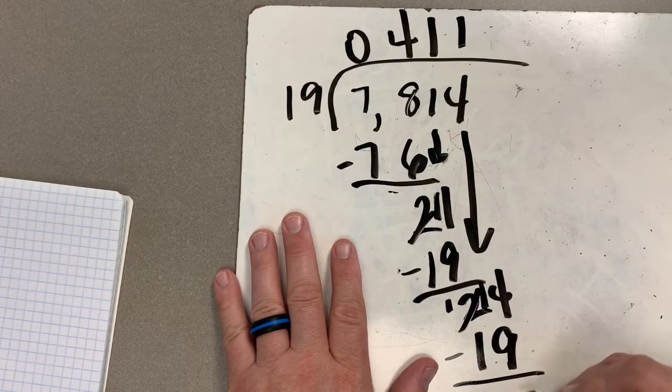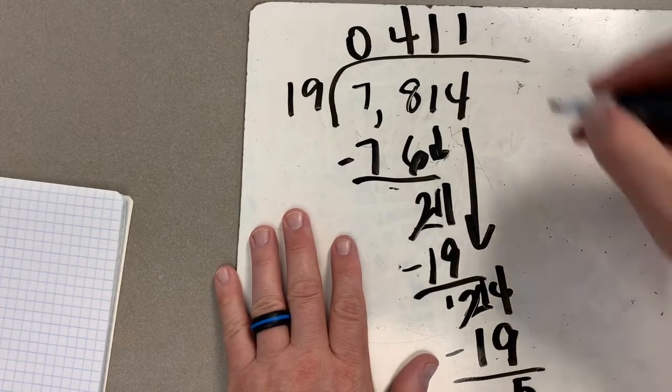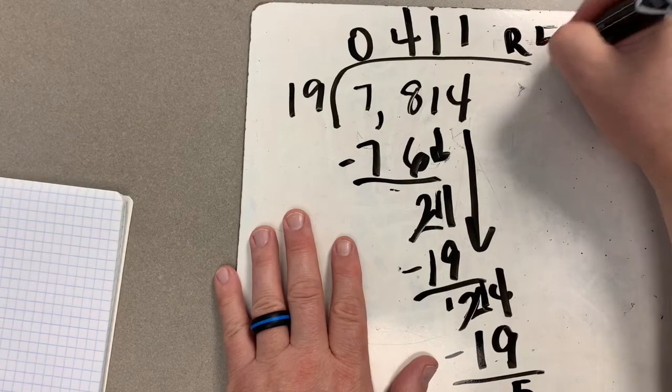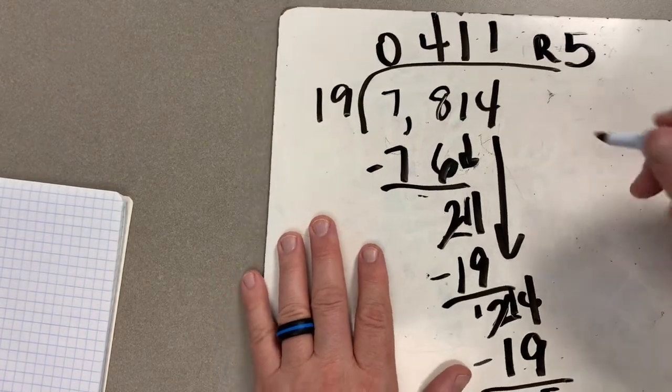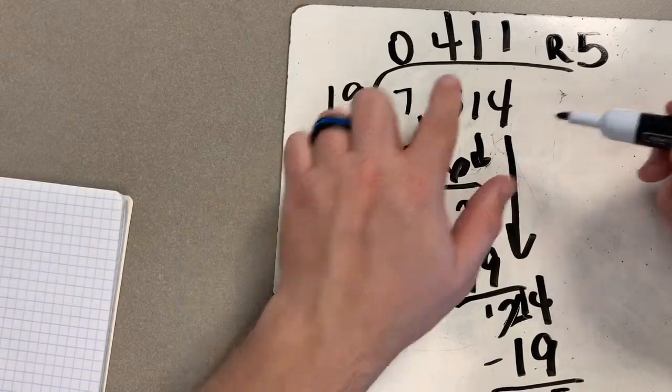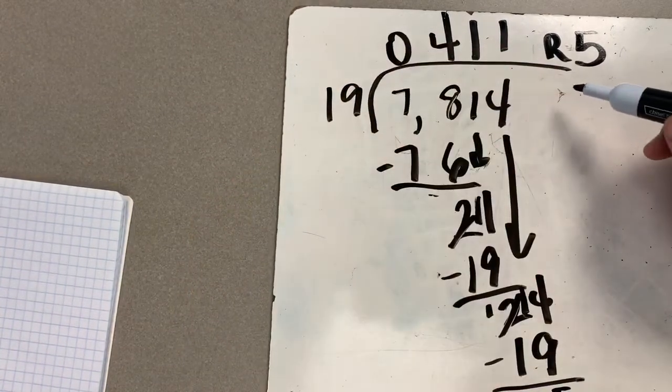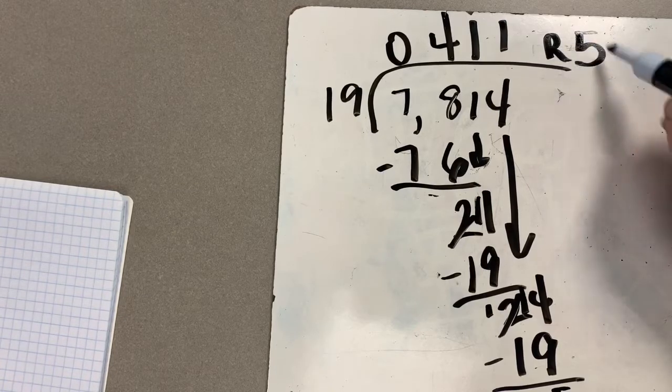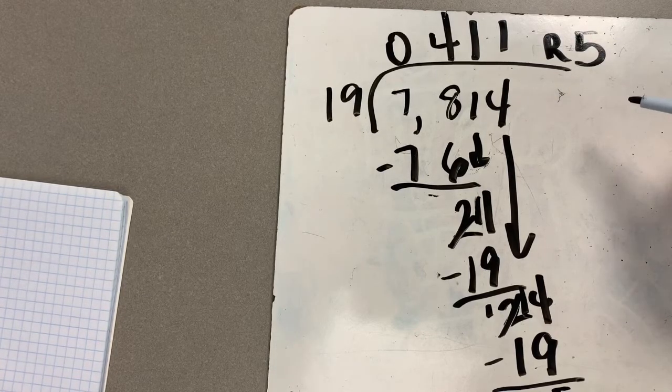14 minus nine is going to give me five. So in this case, if I have 7,814 things, I put them into equal groups of 19. This is saying I will have 411 equal-sized groups, and if I do that, I'll have five things left over that wouldn't fit into another group.